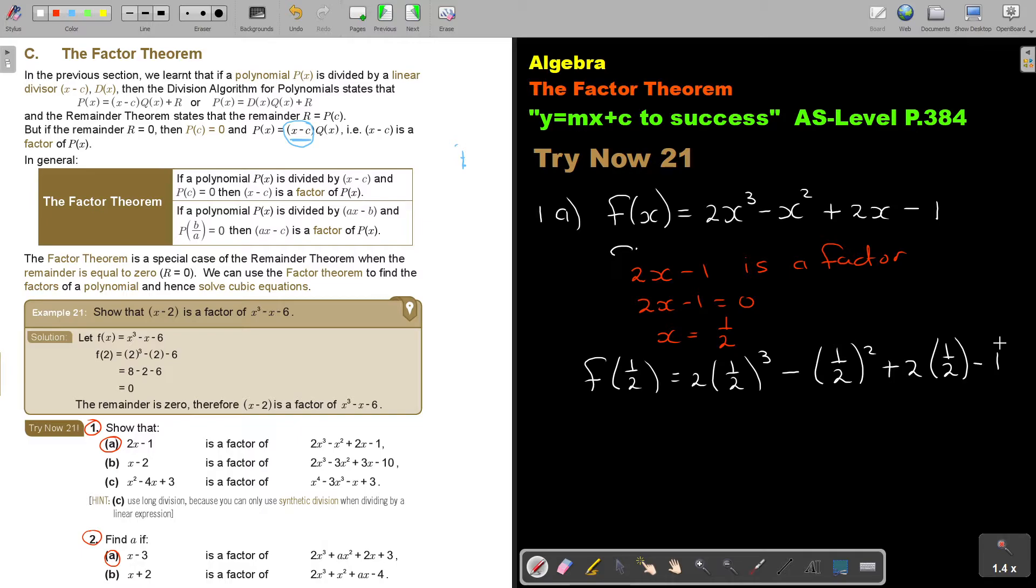And then, I will start 2, a half to the power of 3 minus a half squared plus 2, a half minus 1. So, now, if I do it like this, I'm just going to simplify. So, this is 2. And this is going to be 1 over 8 minus a quarter. Plus 1 minus 1. And this is 2 over 8, which is a quarter. So, a quarter minus a quarter plus 1 minus 1 is 0. And then, I'm ending up and say, therefore, 2x minus 1 is a factor of f. As easy as that.